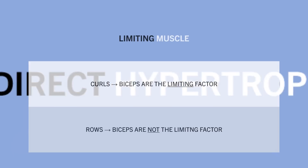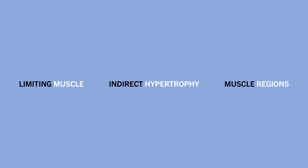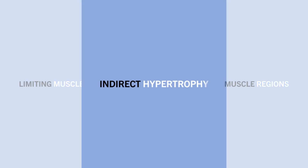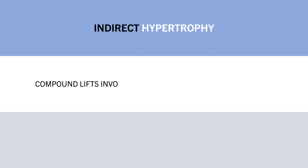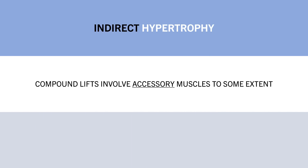However, this concept also goes the other way — via the effects of indirect muscle growth of accessory muscles. While we want each exercise to maximally stress a specific muscle group, other muscles will still be involved to some extent with compound lifts. This means accessory muscles may see some amount of muscle growth, even if it is not maximal.